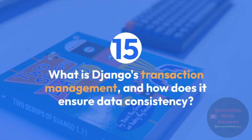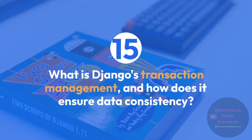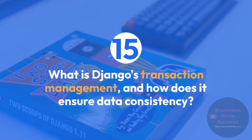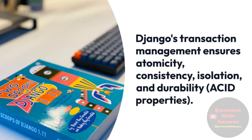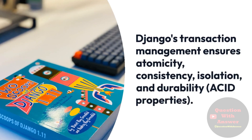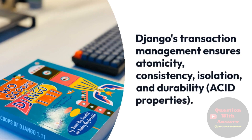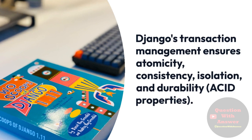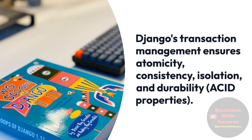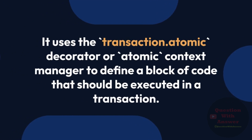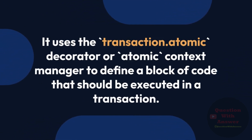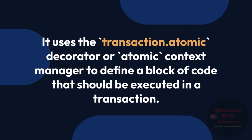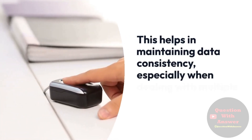Question 15: What is Django's transaction management, and how does it ensure data consistency? Answer: Django's transaction management ensures atomicity, consistency, isolation, and durability or ACID properties. It uses the transaction.atomic decorator or atomic context manager to define a block of code that should be executed in a transaction. This helps in maintaining data consistency, especially when dealing with multiple database operations.